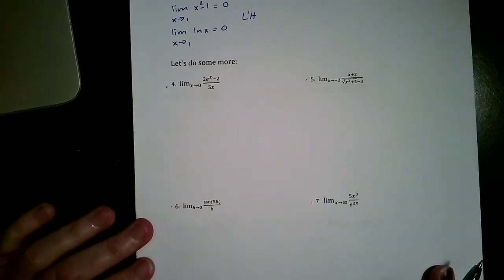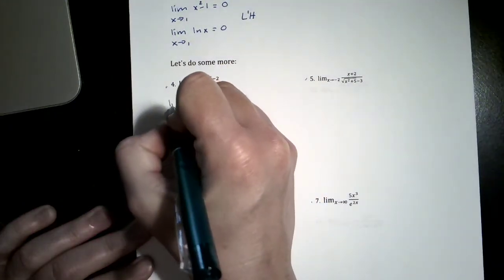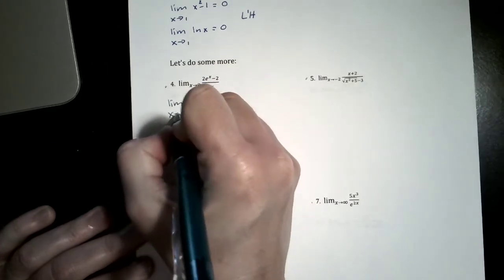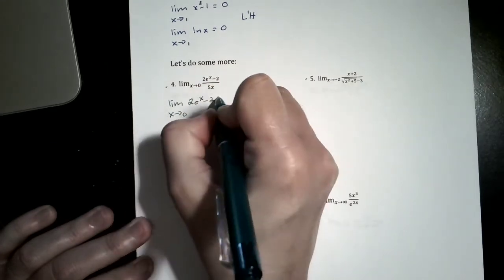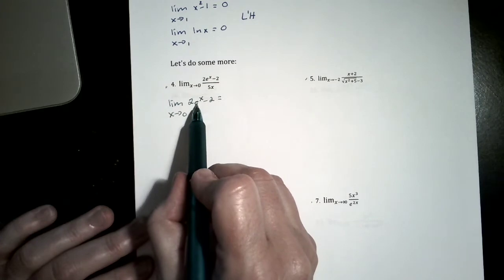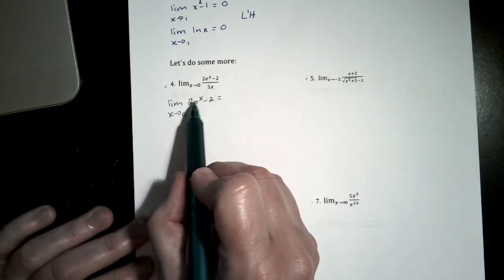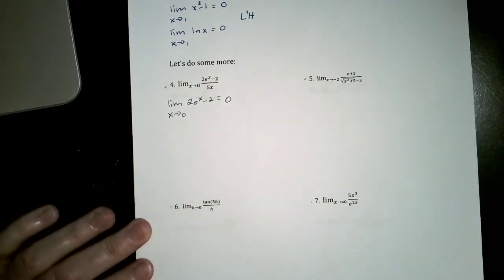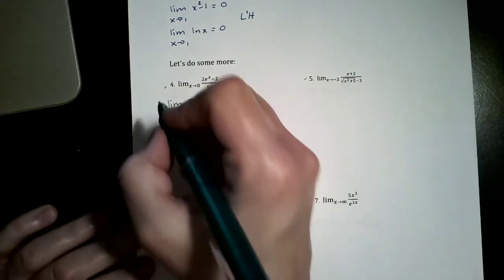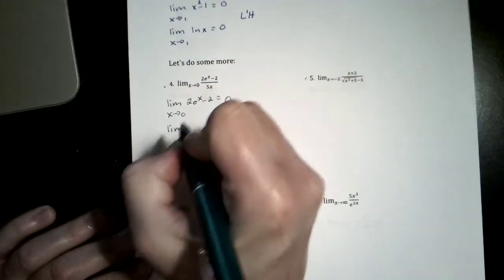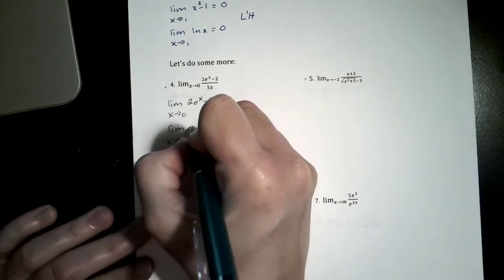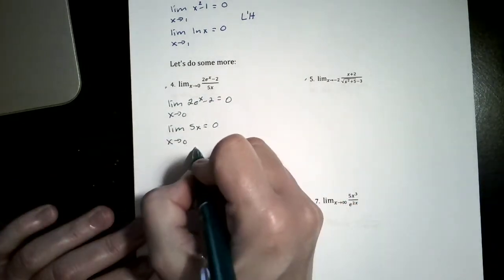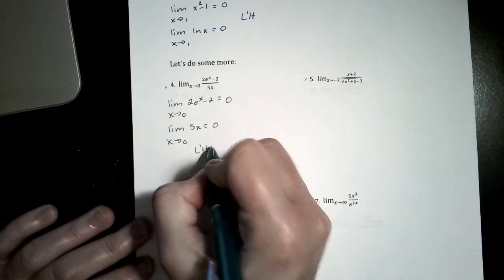So let's take a look at number 4. I'm going to take the limit of the numerator, 2e to the x minus 2, as x approaches 0. By inspection, e to the 0 is 1, 2 times 1 is 2, and 2 minus 2 is 0 — and that's perfectly legitimate to do on the AP exam. Now the limit as x approaches 0 of the denominator, 5x: 5 times 0 is 0, so I can apply L'Hôpital's rule.